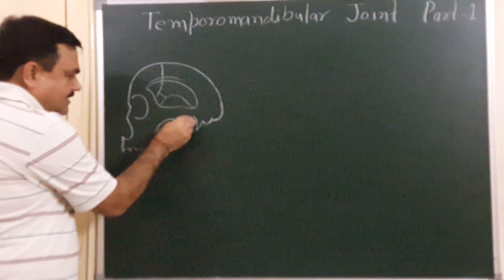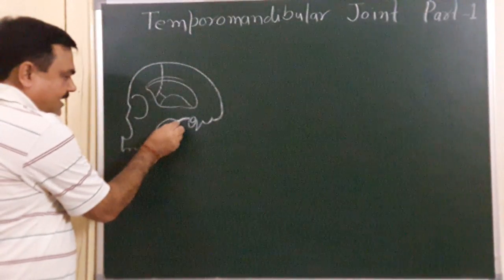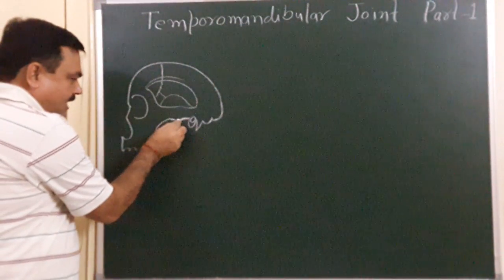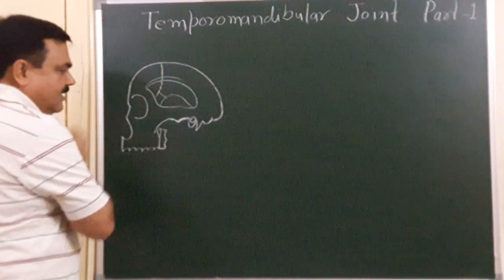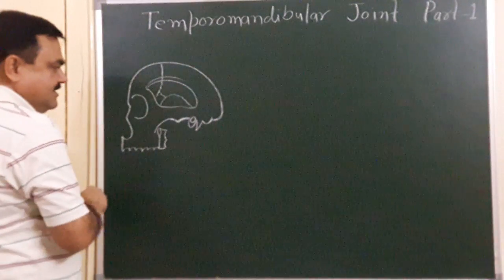This part is the mandibular fossa. This is the articular eminence — this is the articular tubercle or articular eminence.